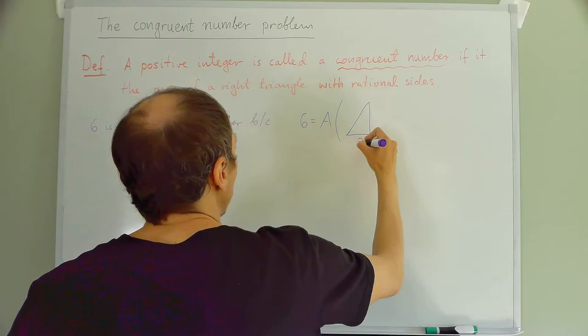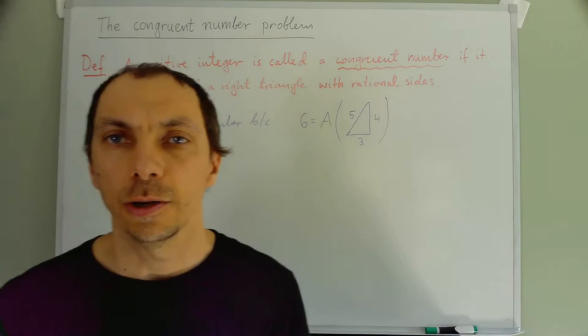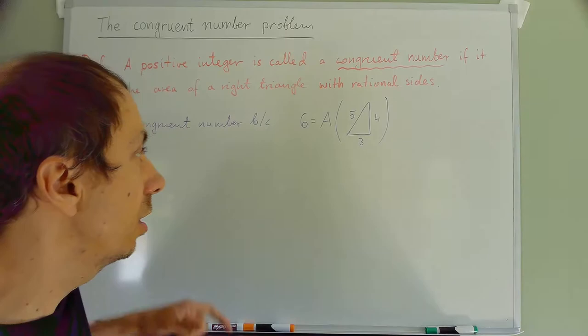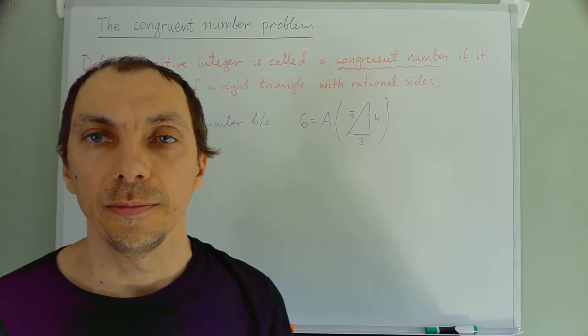So 6 is a congruent number because 6 is the area of the following triangle: the right triangle with sides 3, 4, and 5. It's just the simplest Pythagorean triple, 3, 4, and 5. And if you compute the area of this triangle, you do get 6. And the sides are rational numbers. In fact, they're integers in this case.